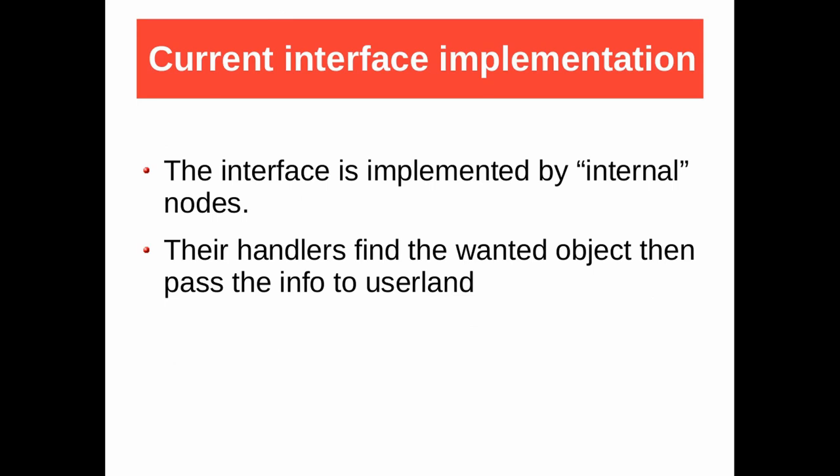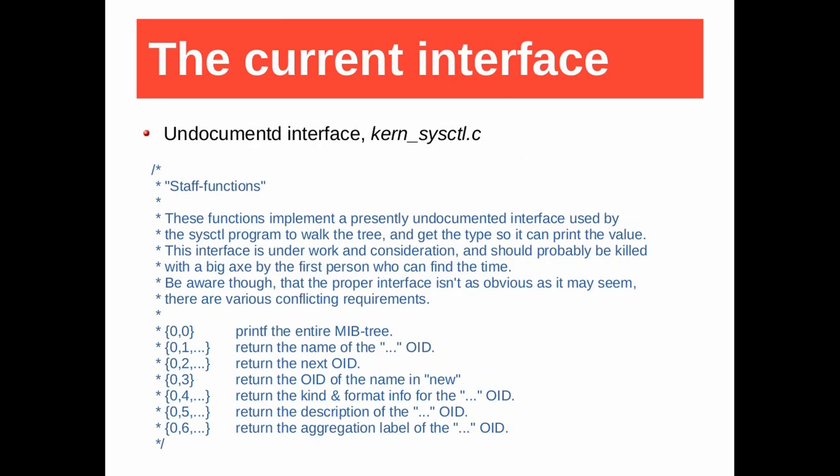The interface is implemented by sysctl nodes. Sometimes they are called internal nodes, magical nodes, or undocumented nodes. Their handlers explore the MIB to find the wanted object, then pass the info to userland via the buffer — exactly like every node. This is the current documentation; it is a comment in kern_sysctl.c. Recently the magical numbers have been replaced by constants, but they are still present in the code.